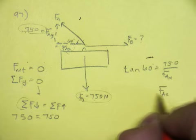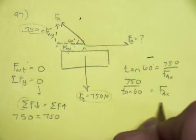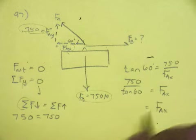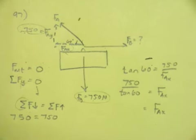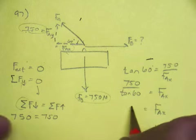So the force in A in the x direction is 750 divided by the tangent of 60. 750 divided by the tangent of 60. You get 433.